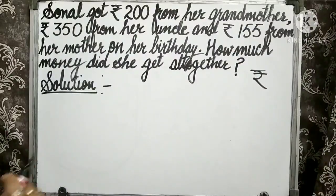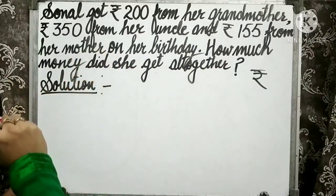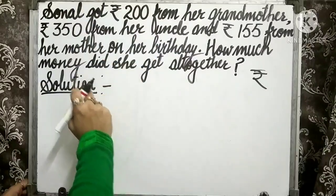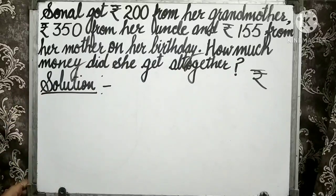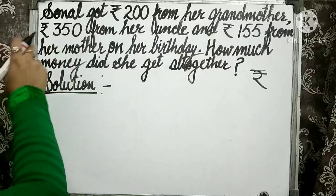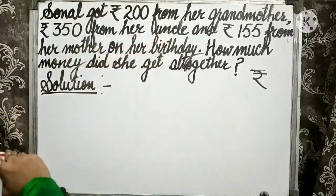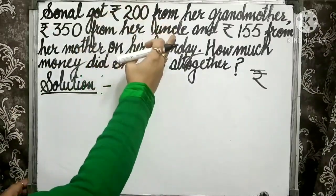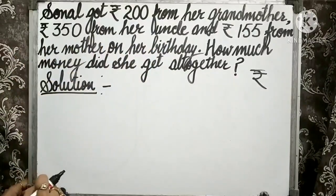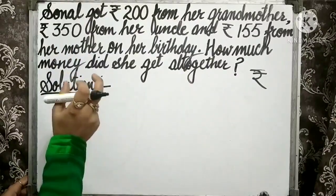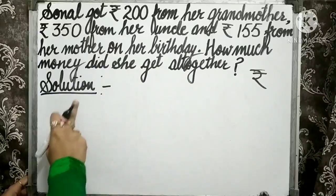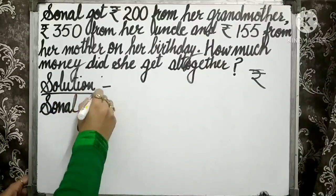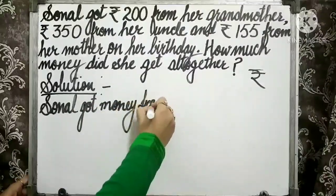Children, now we have to think about how many statements can be formed from the given question. You can write: 'Sonal got money from her grandmother,' 'Sonal got money from her uncle,' and 'Sonal got money from her mother.' You could also write 'money received from grandmother,' 'money received from uncle,' and 'money received from mother.' It's your choice — you can use any of these possible statements.